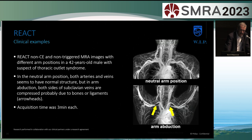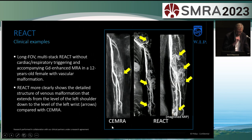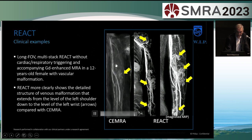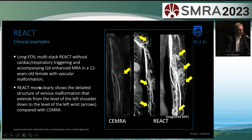Some clinical examples. We did this with a patient with thoracic outlet syndrome. In the neutral arm position, all arteries and veins seem really clear — no problem whatsoever. However, if you go to the arm abduction, or the bonsai position as we call it here, you can see some compression of the vein, probably due to bones and ligaments in the area. So we can see what causes the thoracic outlet syndrome. The acquisition time was about three minutes each for both images. Another clinical example is in children — a 12-year-old female with a vascular malformation. Contrast-enhanced MRI was first used and shows the malformation quite clearly. However, REACT shows the detailed reconstruction of the venous malformation extending from the shoulder all the way down to the wrist, better compared with contrast-enhanced MRI.